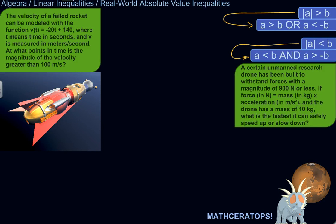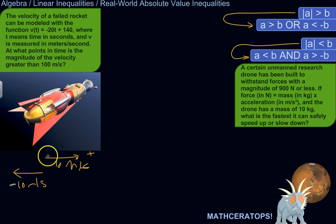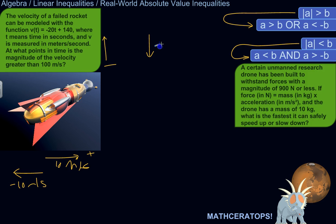Velocity is a vector, which means it has magnitude and direction. Going 10 meters per second in the positive direction has the same magnitude as going 10 meters per second in the negative direction, but the velocity is different — this one is negative 10 meters per second, going in the opposite direction. For our rocket, we want to know when it's going upward at greater than 100 meters per second, or downward with a magnitude greater than 100 meters per second.